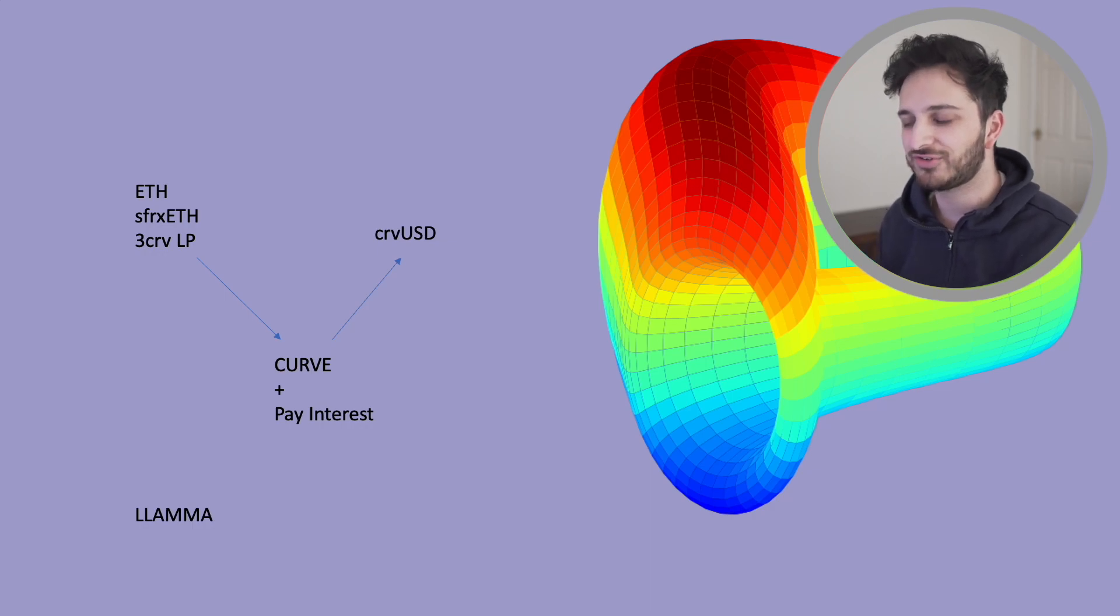The first initial CRVUSD in circulation right now is actually backed by Staked Frax ETH. So there's a good relationship between the Frax team and the Curve team there.